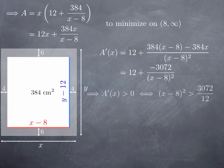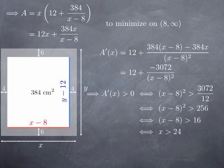Now we can solve the inequality A' positive. Find out for what X the derivative is positive. It is the case if (X - 8) squared is greater than 3072 divided by 12. 3072 divided by 12 turns out to be 256. And (X - 8) squared is greater than 256 if (X - 8) is greater than the square root of 256, which is 16. It's because we know that (X - 8) is positive. In other words, this happens when X is greater than 24.